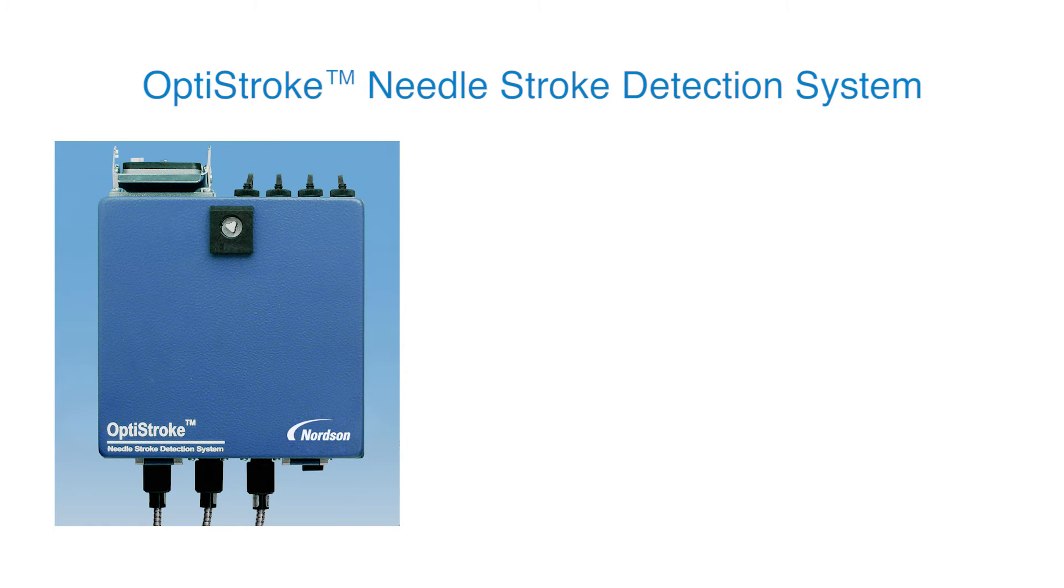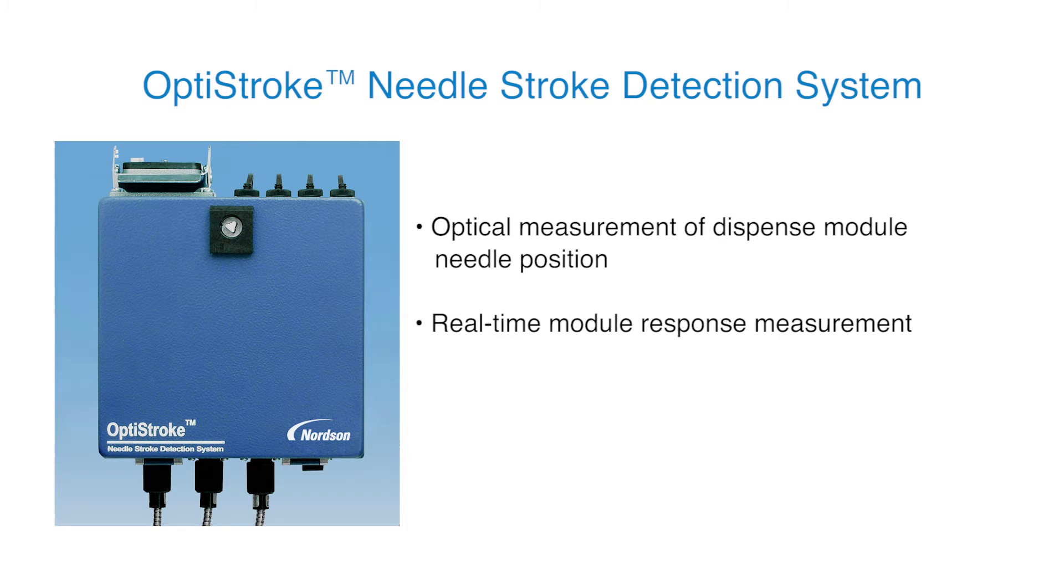The OptiStroke needle stroke detection system is a proven optical measurement system that precisely compares the dispense valve needle position as a function of time. In addition to facilitating pattern monitoring and control, OptiStroke enables predictive maintenance to improve production efficiency and extend equipment life.